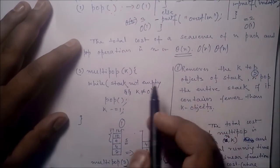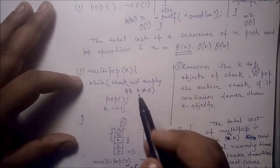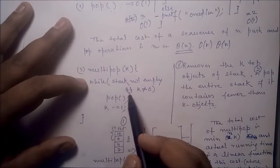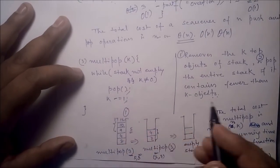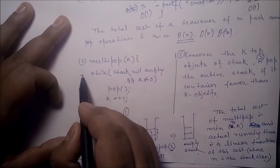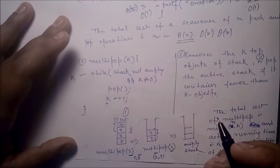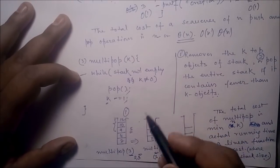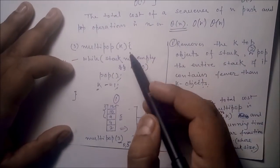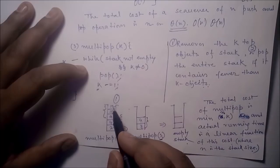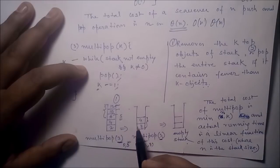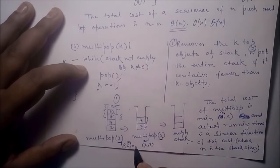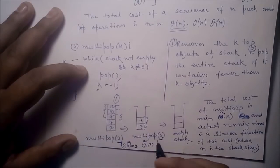For example, suppose there are 5 data elements on the stack and we want to pop 3. We can pop 3 data items, leaving 2 remaining. If we apply multi-pop with k=3 again but only 2 items remain, it will delete only 2 items, not 3. So multi-pop removes the k top objects of the stack, or the entire stack if it contains fewer than k objects. The total cost of a multi-pop is min(n, k).